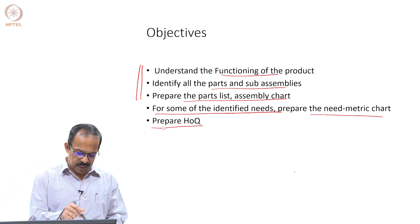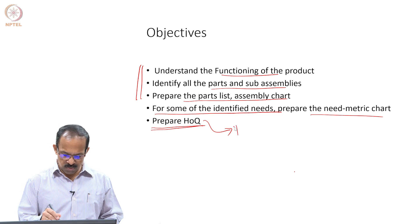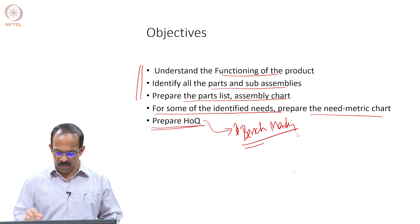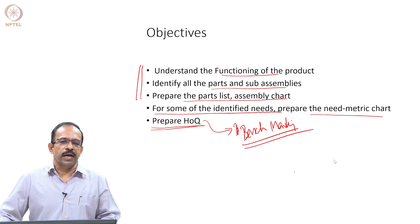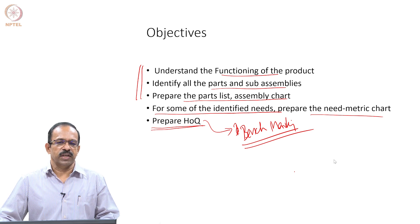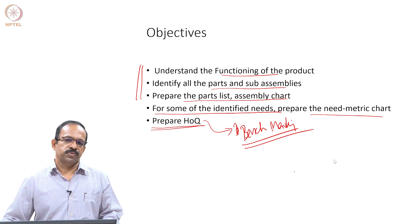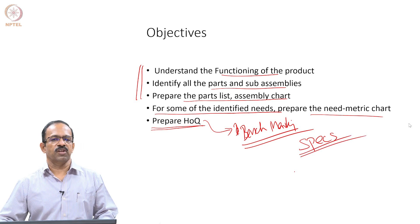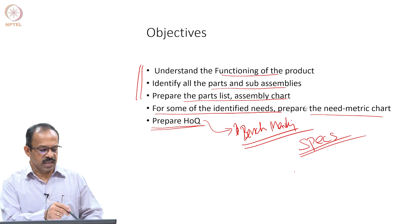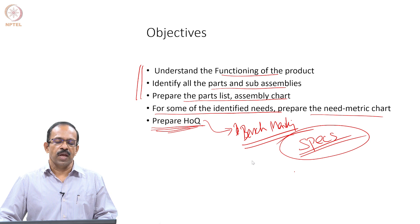The next step is to prepare the house of quality. In order to do that, you need to get the benchmarking values from the products available in the market. As a group, you can work on this, identify the benchmarking values, and determine how the products are satisfying the market currently — whether they are highly satisfied or less satisfied. Based on that and the metric values, you can identify the target values. At the end, you will get the metrics and target values that become the specification for the product.